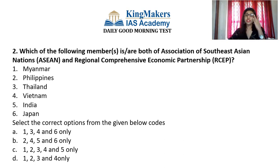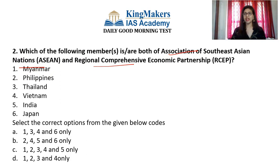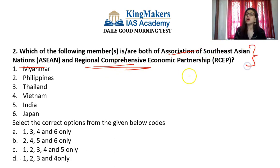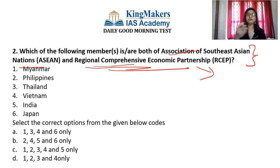The next question: which of the following members are part of both ASEAN — the Association of Southeast Asian Nations — and RCEP, the Regional Comprehensive Economic Partnership? In yesterday's current affairs class we discussed ASEAN. Now you also need to identify the members of RCEP, which is very important from economics, current affairs, and theoretical perspectives. The options given are: 1. Myanmar, 2. Philippines, 3. Thailand, 4. Vietnam, 5. India, 6. Japan. You must identify which are members of both ASEAN and RCEP.